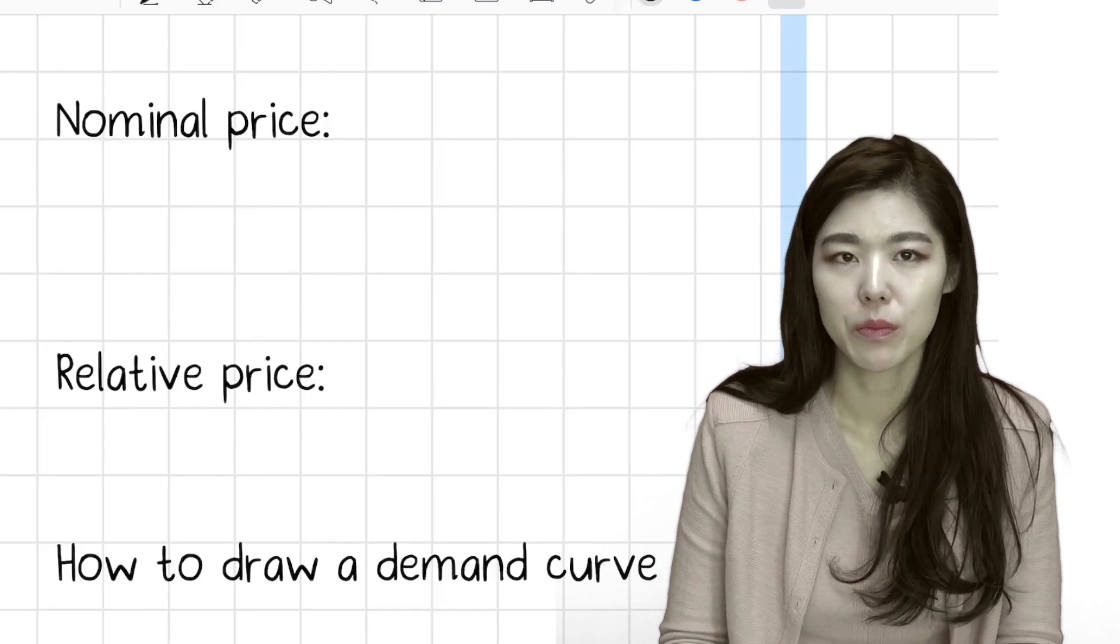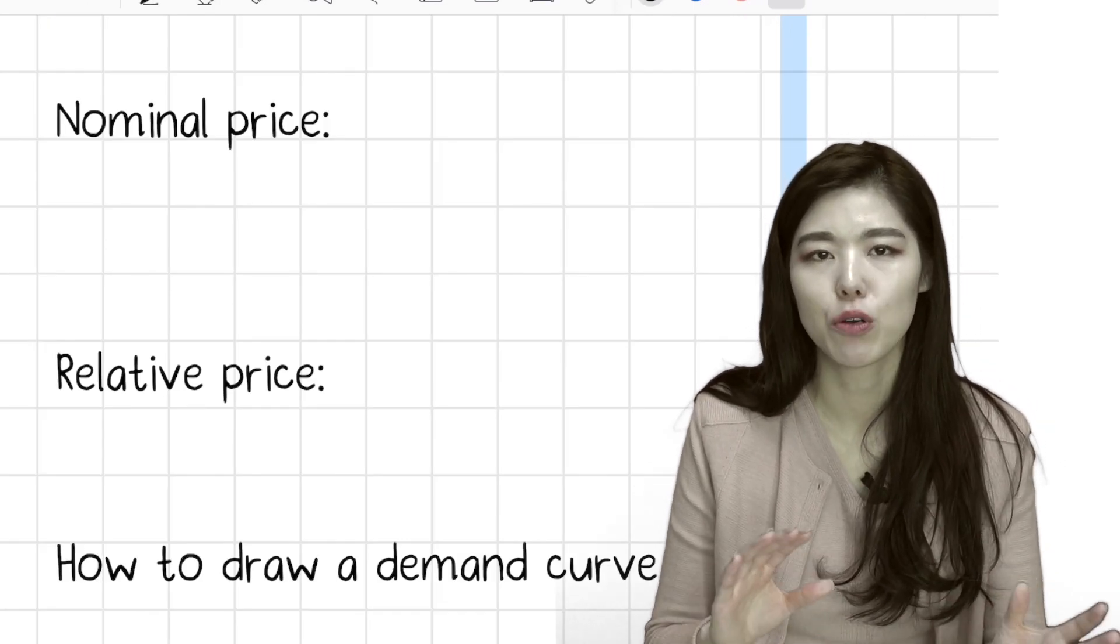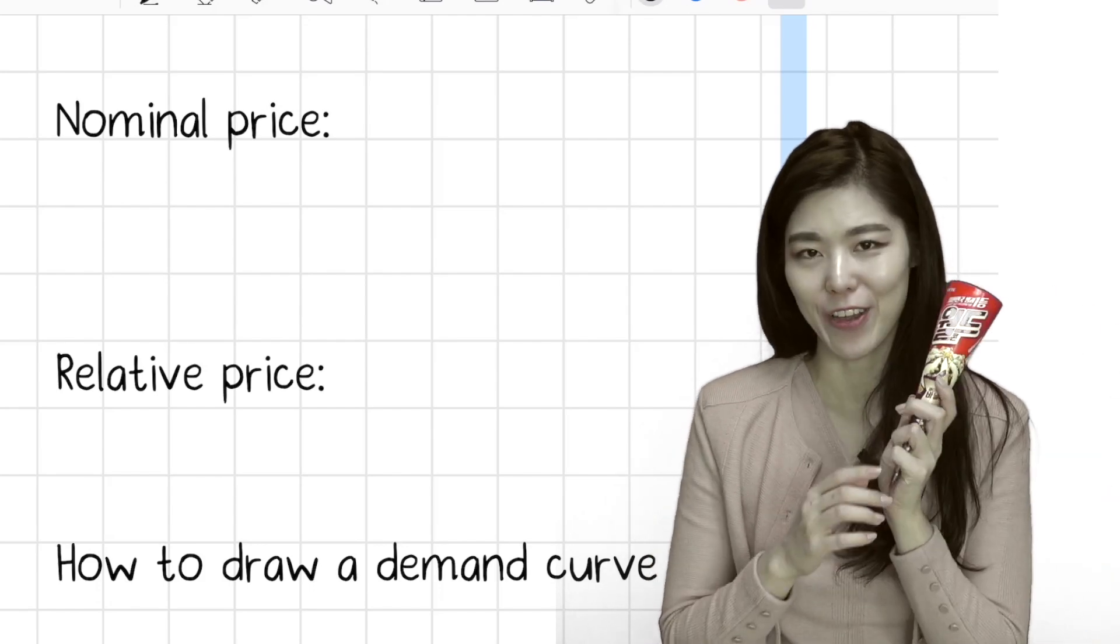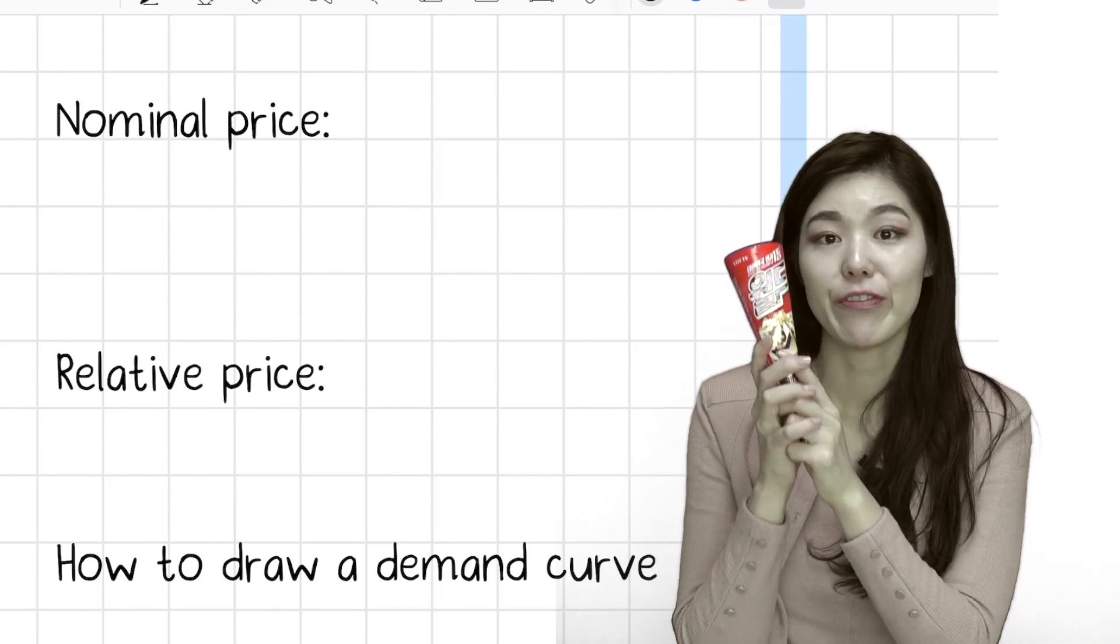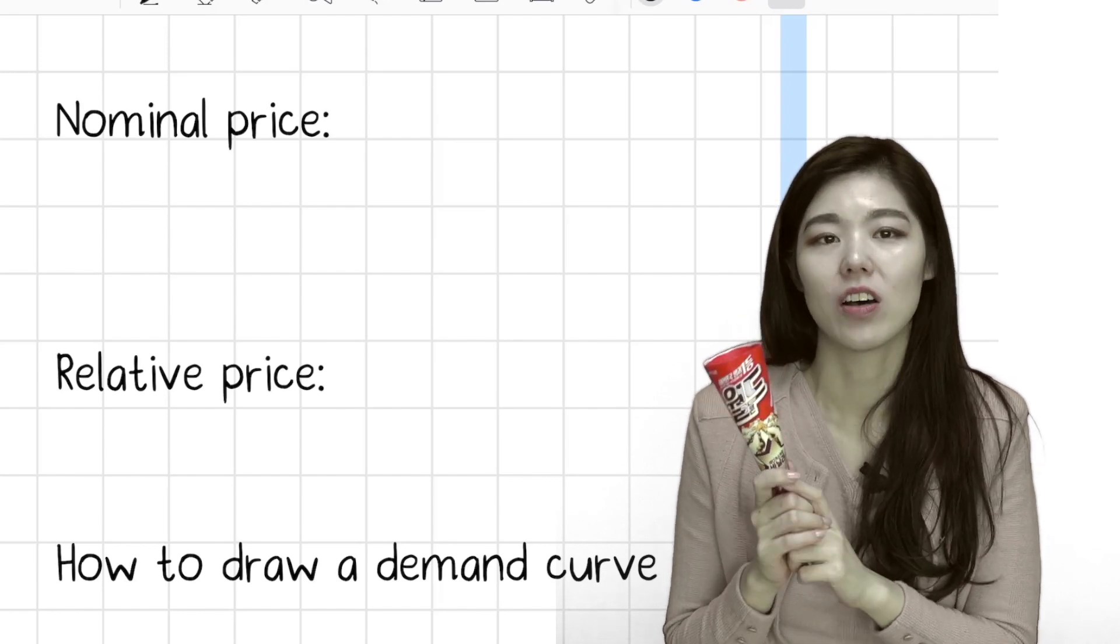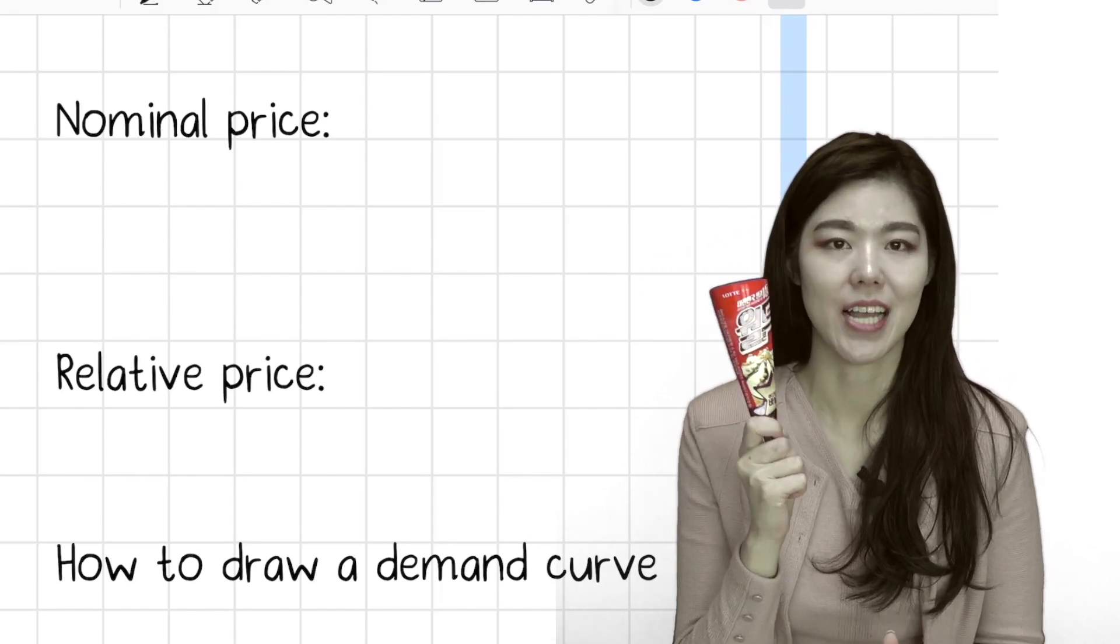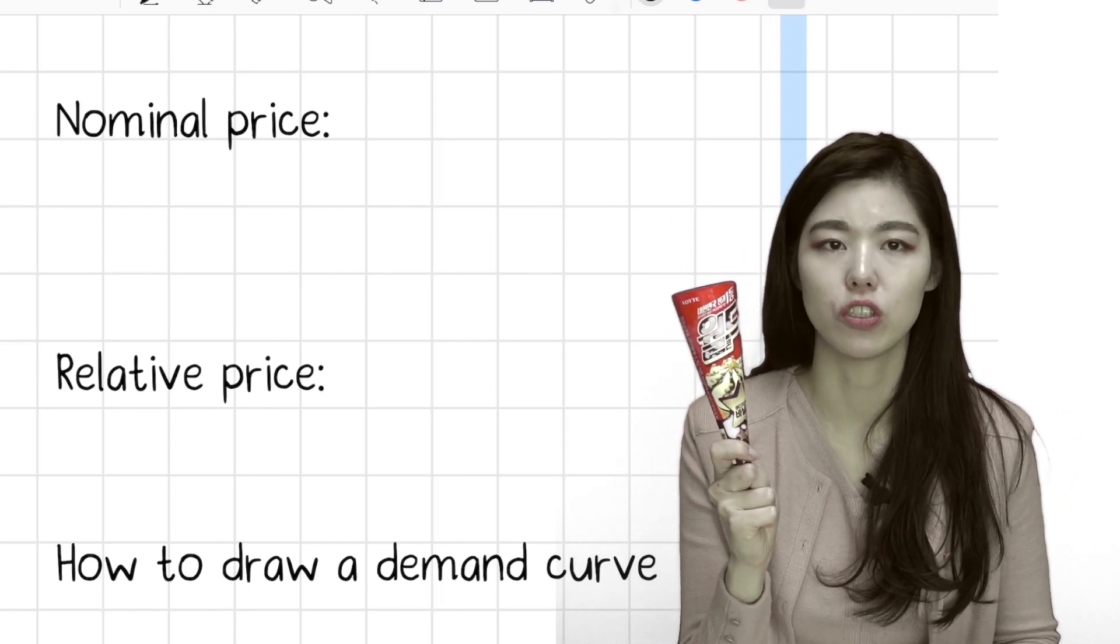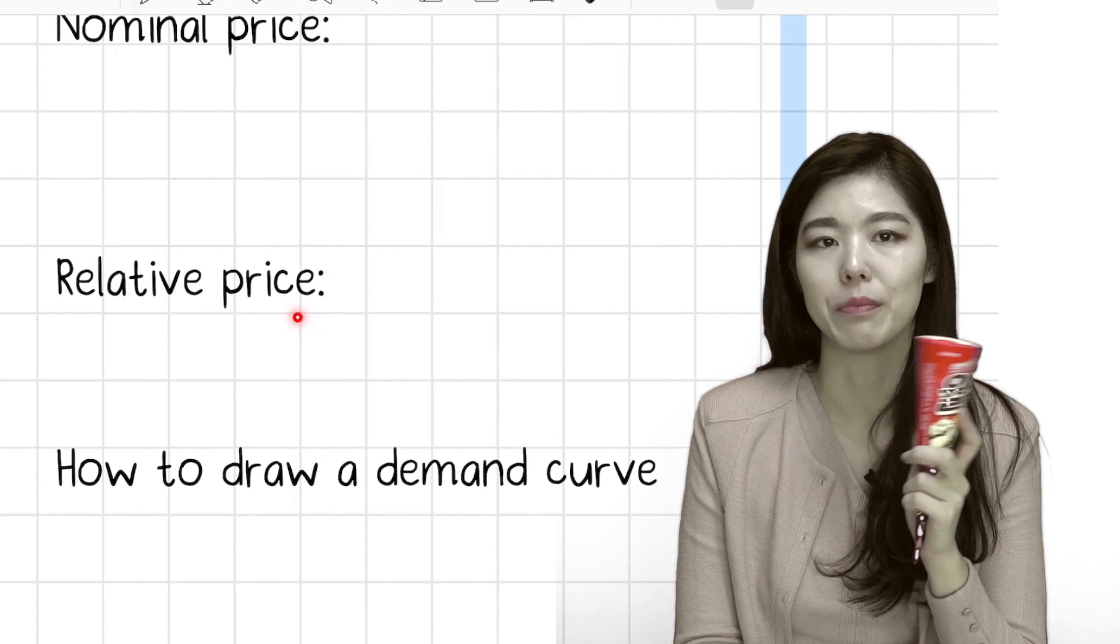Nominal price - it means the literal price in numbers. When I was in kindergarten, one of my favorite ice creams was like 50 cents. Yeah, age difference, right? Now it costs like $1.50. In nominal price terms, this sounds like it has increased this price so much. But you also have to look at the relative price.